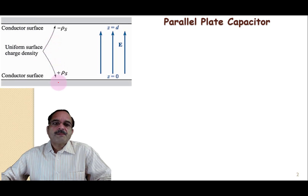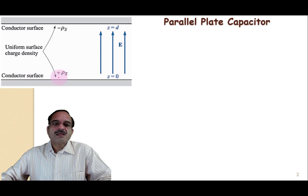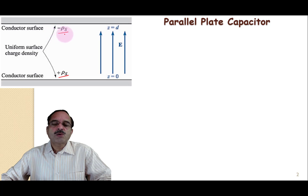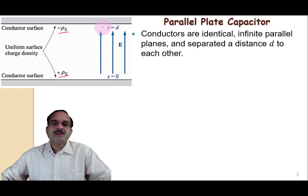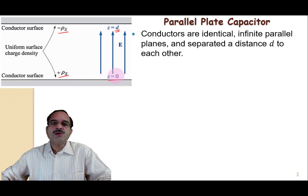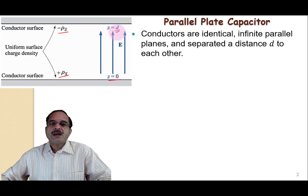Now, if we assume a parallel plate capacitor where there are two conducting surfaces — one with a charge density of +ρs and another with a charge density of −ρs — and the separation between these two conductors is distance d. The +ρs conductor surface is at z = 0 and the negatively charged conductor surface is located at z = d. Because of this charge density, there will be some electric field.